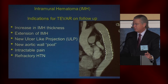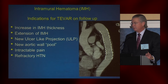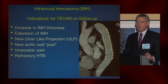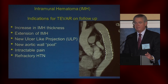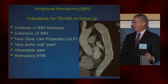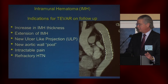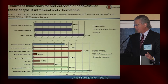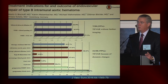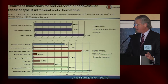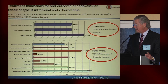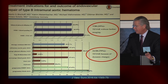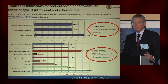The indications for endovascular intervention include: increased intramural thickness on follow-up CT, extension of the intramural hematoma, new ulcer-like projections, new aortic wall blood pool, intractable pain, and refractory hypertension. Looking at the natural history, about 75% of patients require continued conservative follow-up, whereas 25% end up undergoing TEVAR without further imaging at initial presentation.